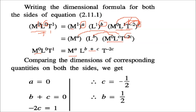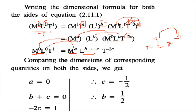Equating powers: for M: A = 0; for L: B + C = 0; for T: −2C = 1, giving C = −½ and B = ½.